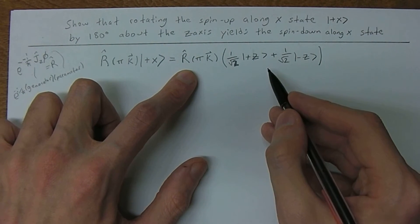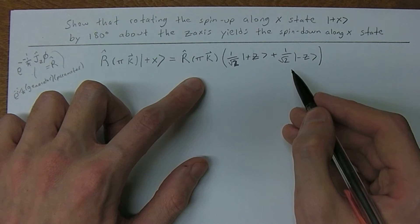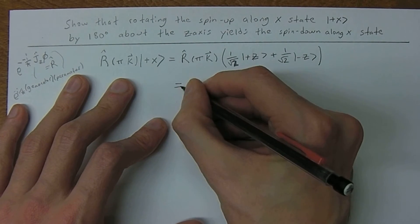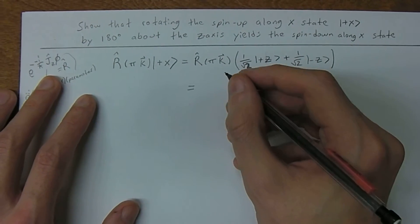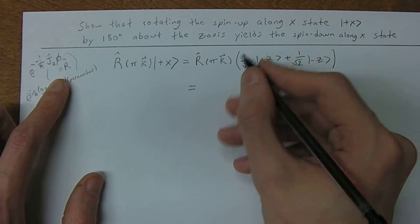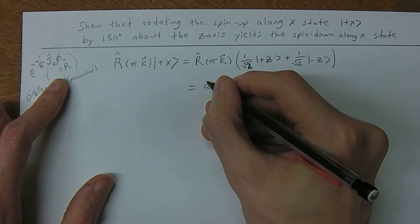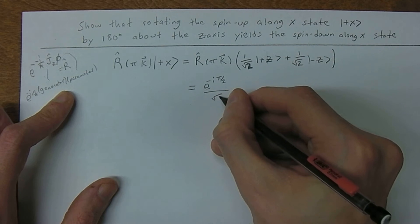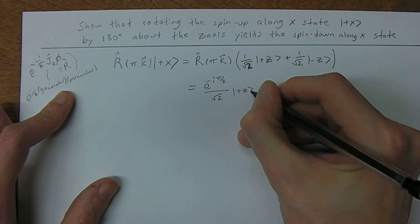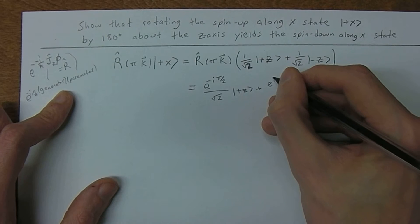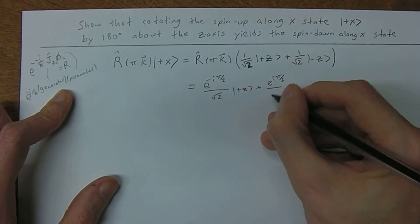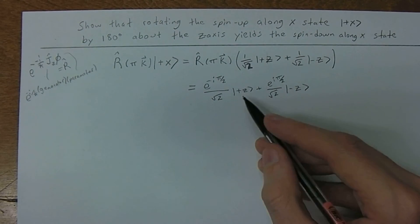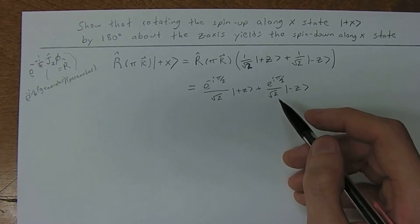We're going to act the operator on this state and bring in the phase. There's a relative phase and a general phase. The result is e to the negative i pi over 2, divided by square root of 2, times plus-z, plus e to the positive i pi over 2, divided by square root of 2, times minus-z. These are relative phases with respect to each of the z basis states.